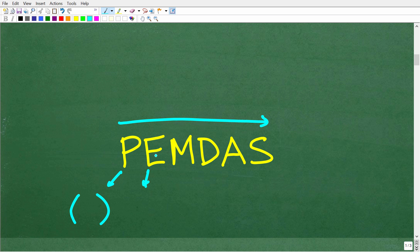E stands for exponents, but you can think of that as powers. After you determine if you have any parentheses, you look for powers next. You may not have parentheses and you may not have powers.